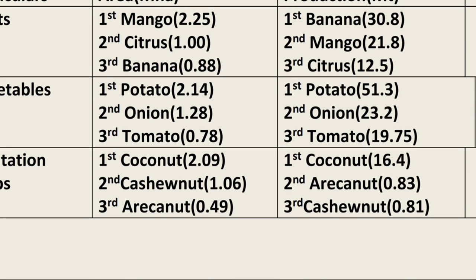For vegetables, potato has the maximum area, onion is second, and tomato is third. In terms of production, potato has the maximum production at 51.3 million ton. This is a very important exam question: which horticulture crop has the maximum production? The answer is potato, with 51.3 million ton.